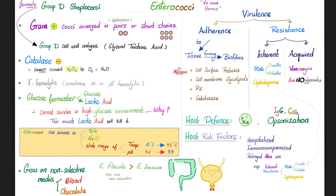Enterococci are catalase negative, gamma hemolytic, and glucose fermenters. If you want to kill Enterococci, do not go with high salt — go with high glucose, because accumulation of lactic acid will be deadly to them. Since this bacteria can survive in a variety of conditions, it can grow on basically any medium: blood agar, chocolate agar, why not? Examples of Enterococci include Enterococcus faecalis and Enterococcus faecium — both named from feces, because they colonize the colon and urinary tract.